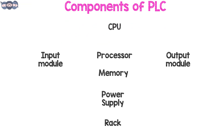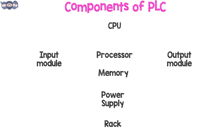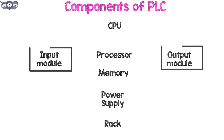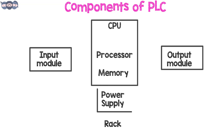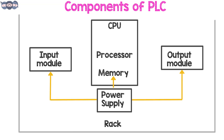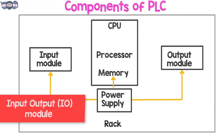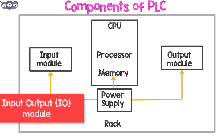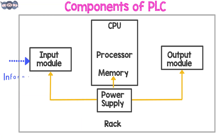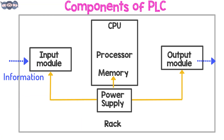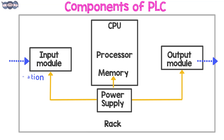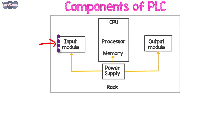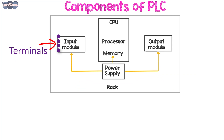The input/output, or IO, modules — information is passed in and out of the PLC through these IO modules. The input module has terminals into which electrical signals generated from sensors or transducers at the plant side are entered.